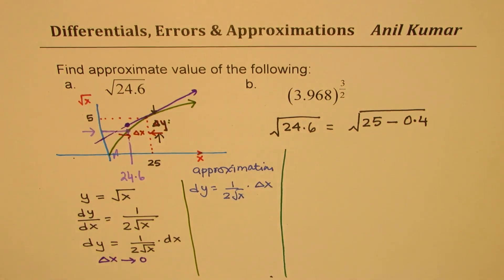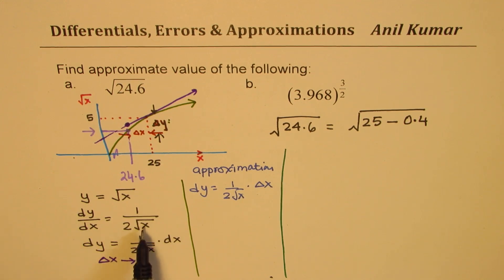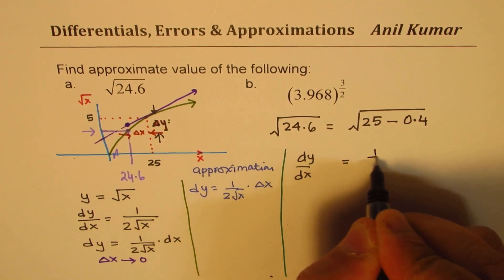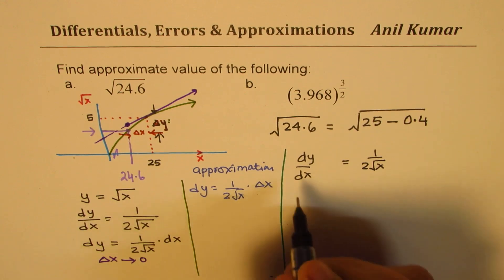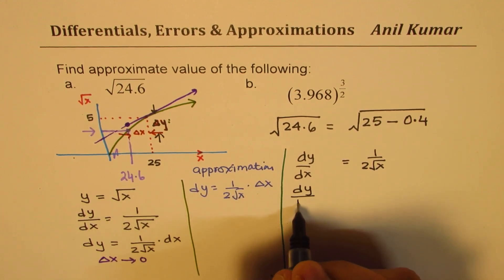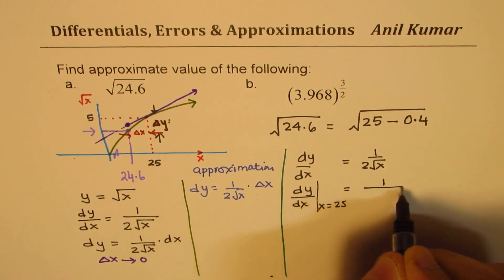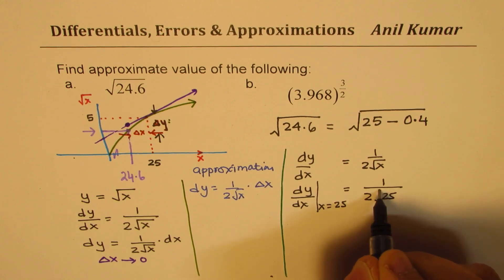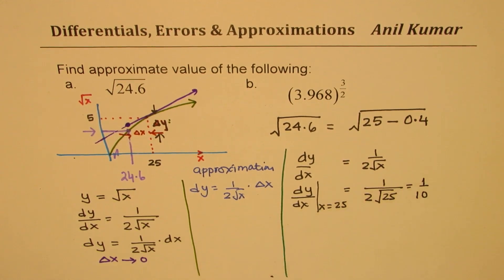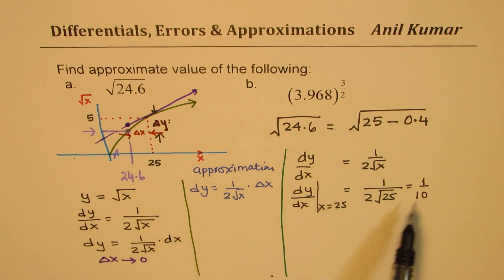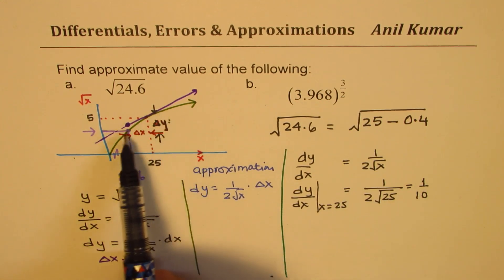Basically, what we really know here is the rate of change at x equals to 25. So we know now that dy/dx is equal to 1 over 2 square root of 25, and that is 1 over 10. So we got the value of dy/dx at our point of interest, which is 25, as 1 over 10. So this gradient is 1 over 10.